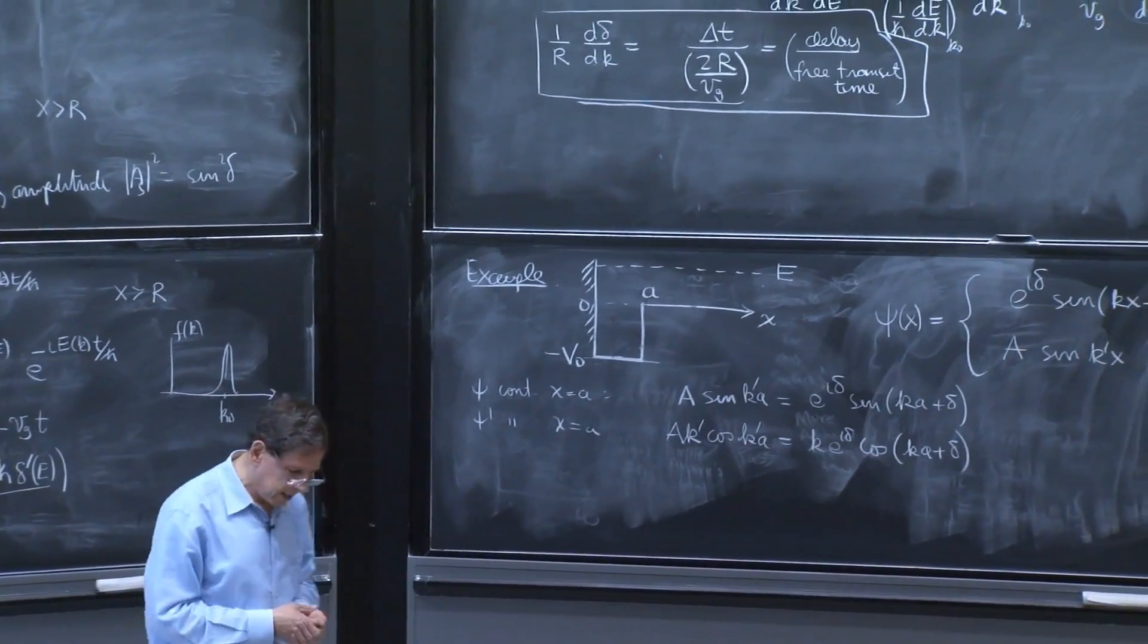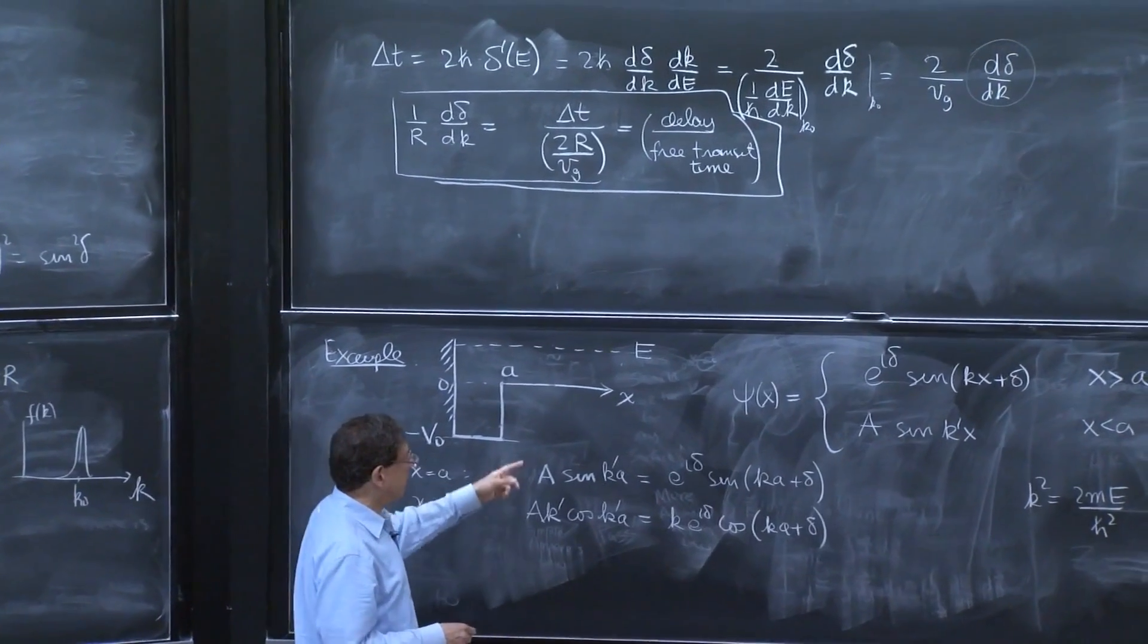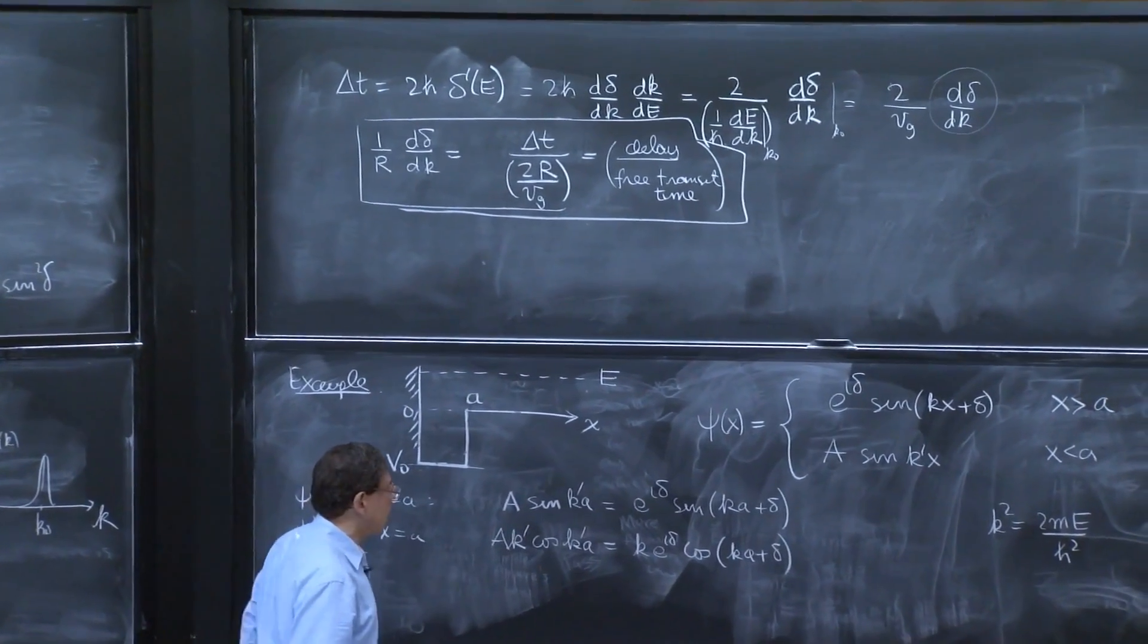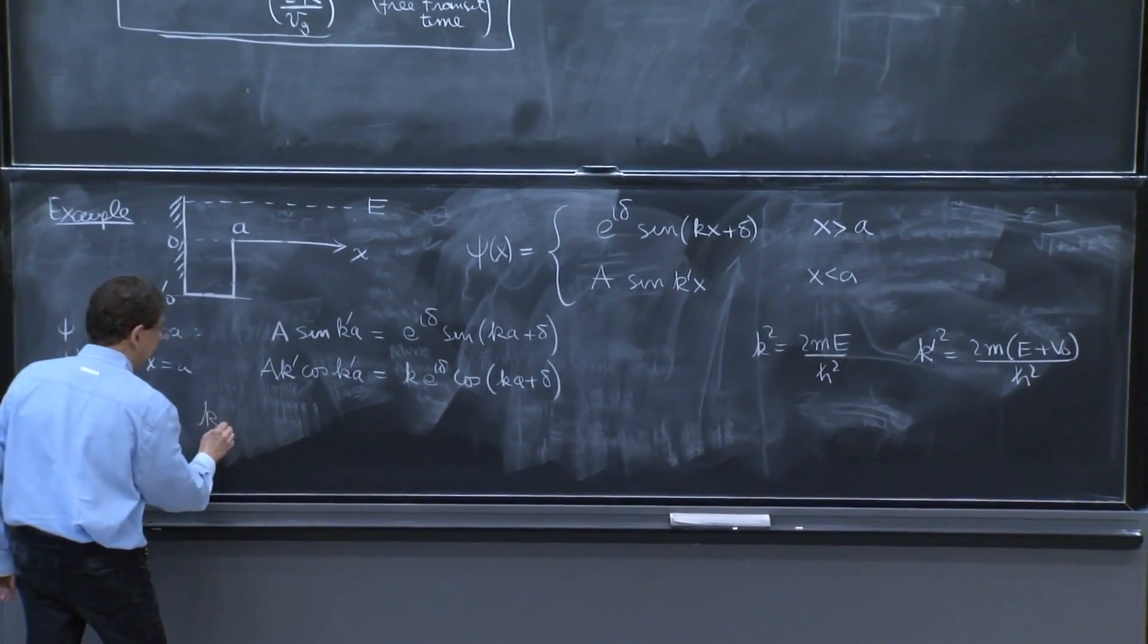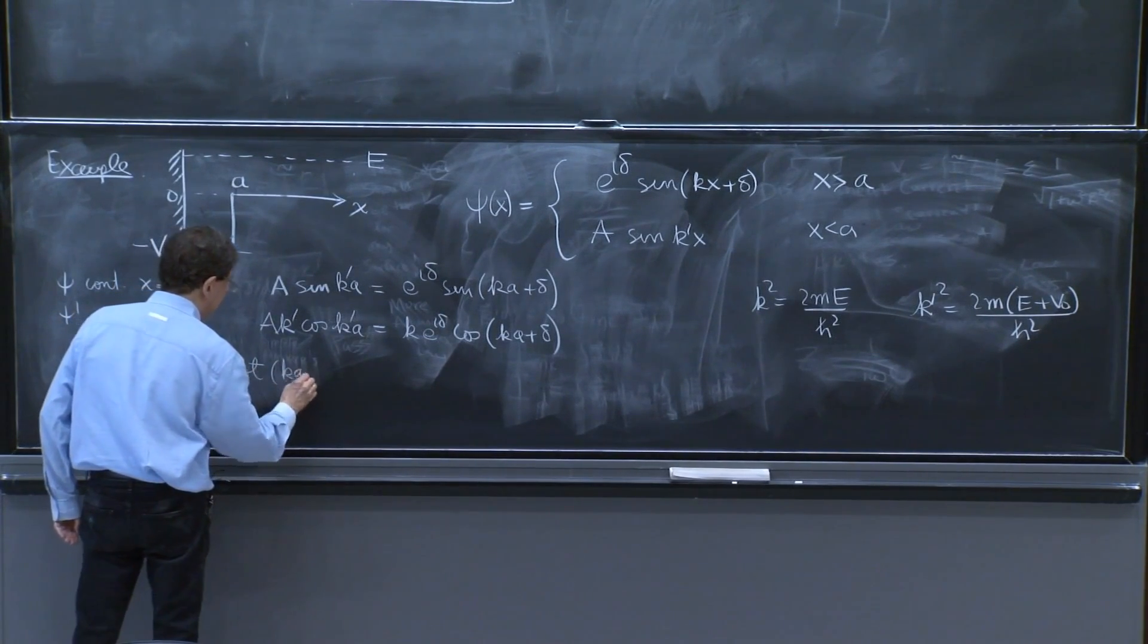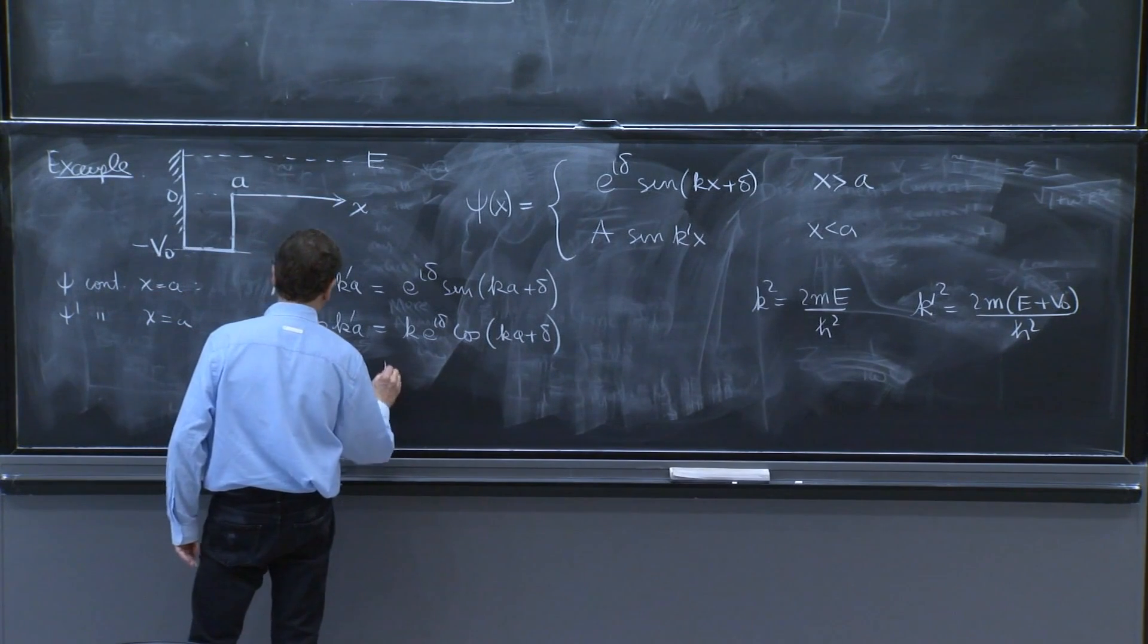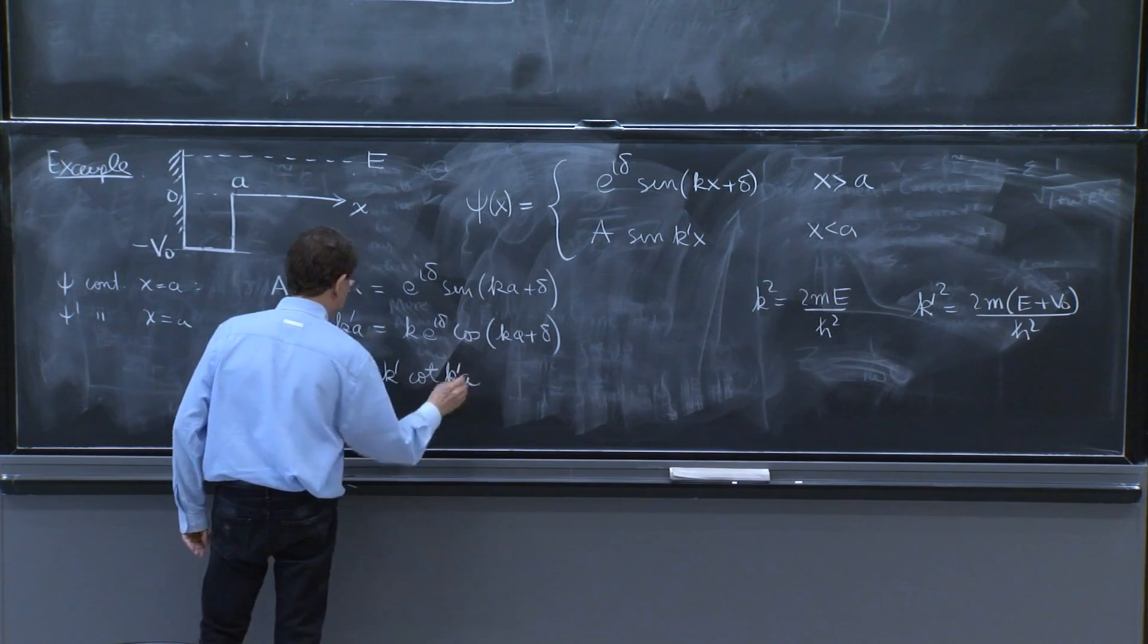Well, one way to calculate it is to take a ratio of these two equations so that you get rid of the a constant. So from that side of the equation, you get k cotangent of k a plus delta is equal to k prime cotangent of k prime a.